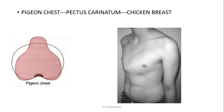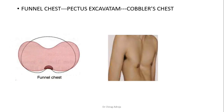Third deformity is pigeon chest, also called pectus carinatum or chicken breast. Here there is protrusion or forward displacement of the sternum along with its costal cartilage attachment — it develops a triangular shape in cross section. Pigeon chest is mostly seen in patients having rickets or some congenital anomaly.